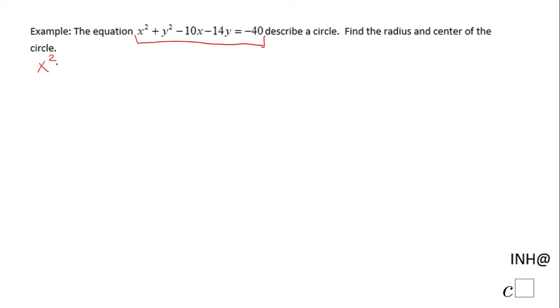The first thing you want to do is to rearrange this equation. Put x's with x, so x squared minus 10x, and y's with y's, plus y squared minus 14y equals negative 40.